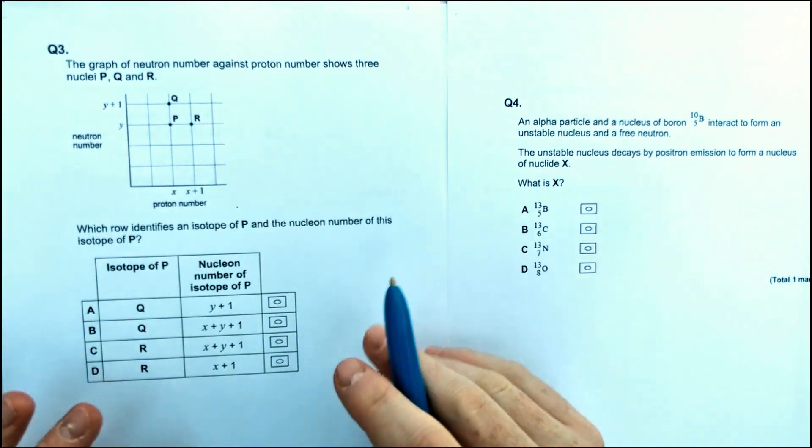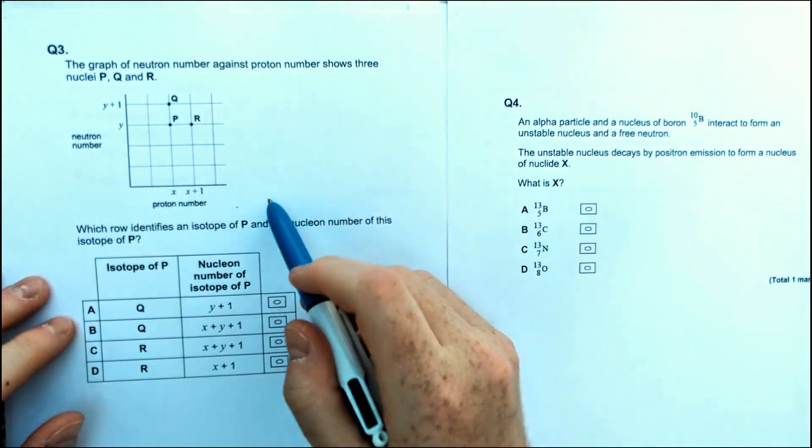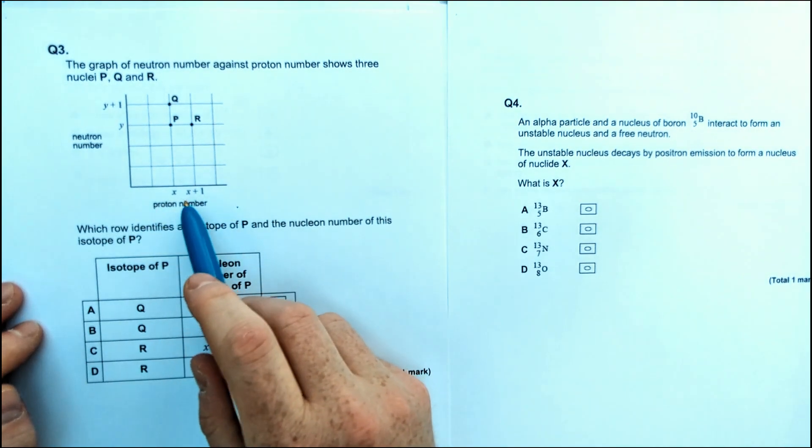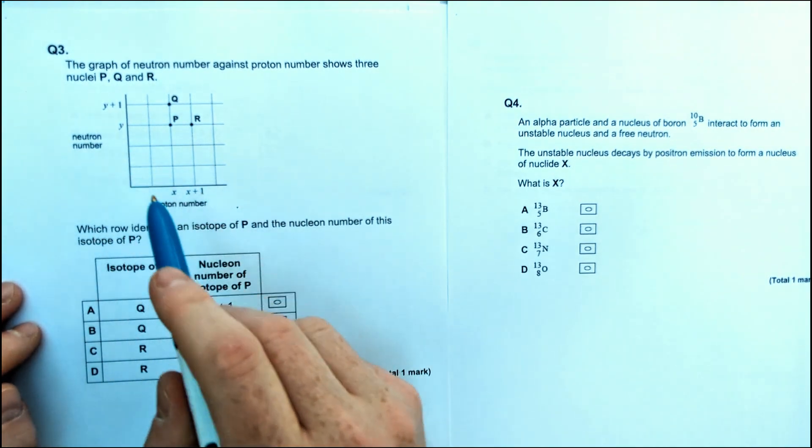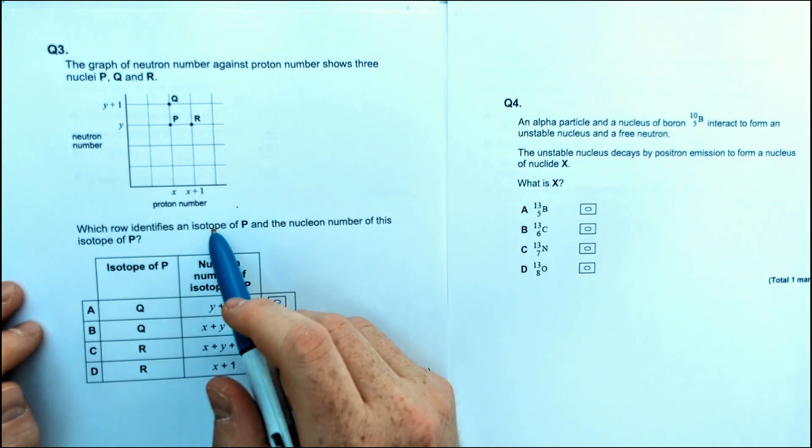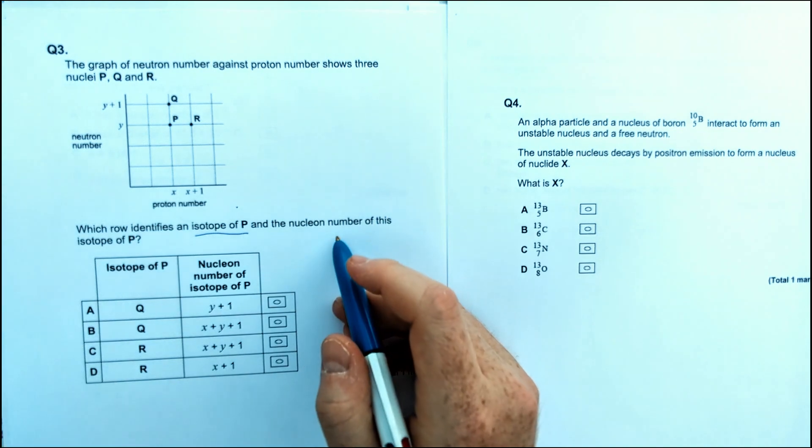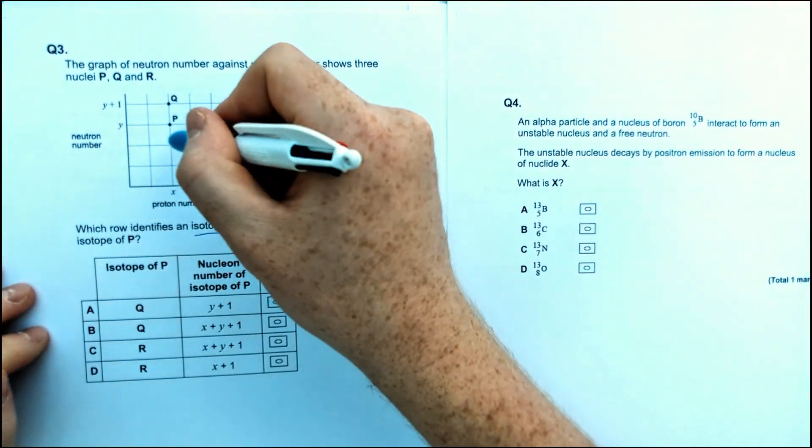The next question is also about isotopes. This question is also about isotopes. And we've got a graph here with neutrons versus protons. And we haven't got any numbers. We've just got plus 1 and minus 1 for what there is originally. So at 3 isotopes, which of these rows identifies an isotope of P and the nuclear number of this isotope?